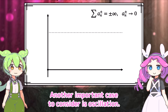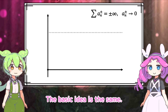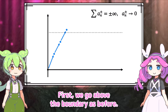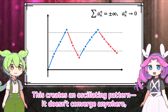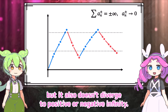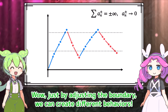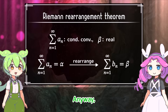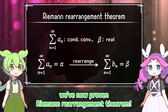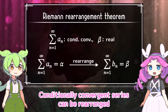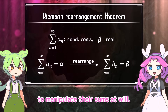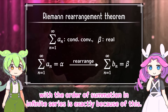Another important case to consider is oscillation. The basic idea is the same: first go above the boundary, then go below a lower boundary, then go above the original boundary again. This creates an oscillating pattern — it doesn't converge anywhere, but also doesn't diverge to positive or negative infinity. Just by adjusting the boundary, we can create different behaviors. We've now proven the Riemann Rearrangement Theorem — conditionally convergent series can be rearranged to manipulate their sums at will.